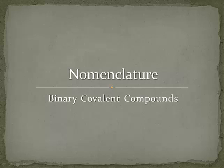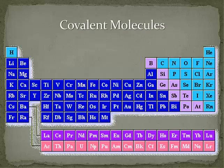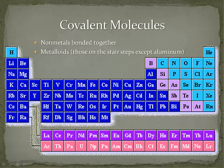Before we can start naming binary covalent compounds we have to look at what a covalent compound is. Covalent compounds are also called molecules. Covalent molecules are made up of non-metal atoms bonded together. This periodic table has different colored blocks on it — the light blue blocks are the non-metals. You see hydrogen on the left and everything else is on the right hand side. We also have gray colored blocks which we call metalloids, and they will also take part in covalent molecules.